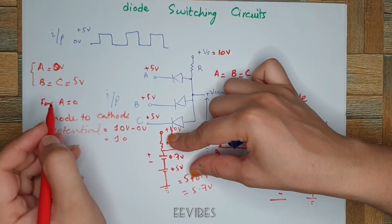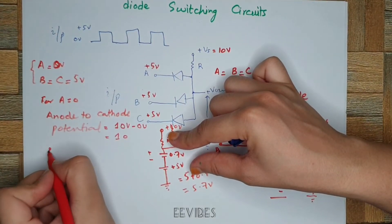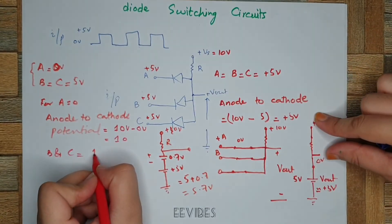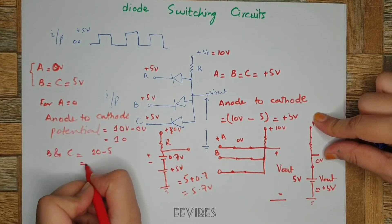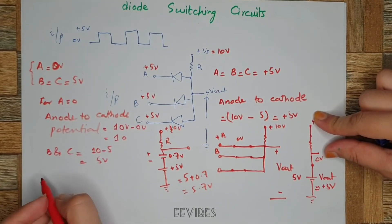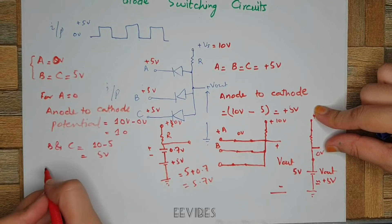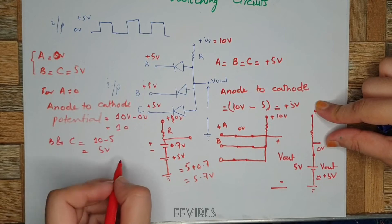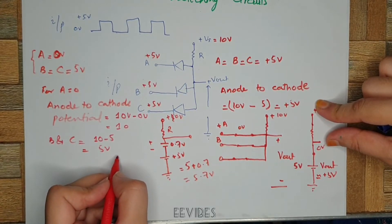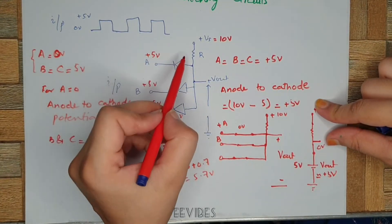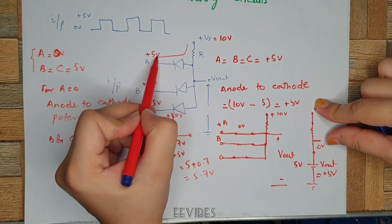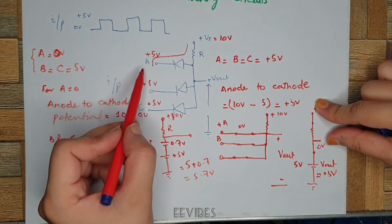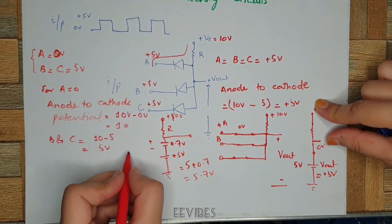Similarly, for inputs B and C, the anode-to-cathode potential is 10 volts minus 5 volts, which equals 5 volts. According to the law of conduction, current always takes the path where the maximum potential difference exists. Therefore, the current will take its path through the diode which has input A equal to 0 volts, since it has the higher potential difference of 10 volts.